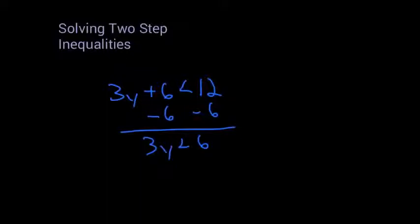Now I've got to get rid of the 3 times y. The opposite of times 3 is divide. So I can divide both sides by 3, keeping my inequality balanced. So I get y is less than 3.